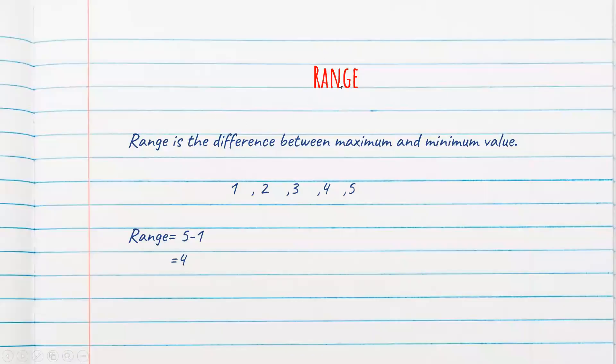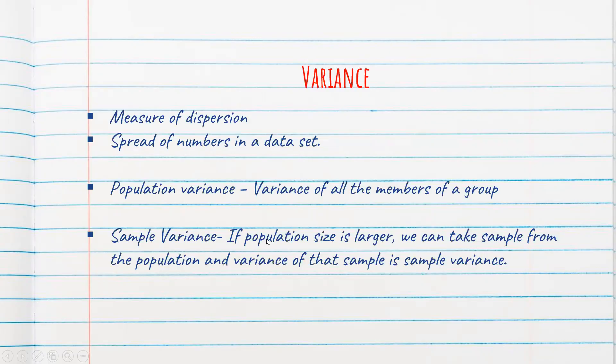First of all what is meant by range? Range is nothing but the difference between maximum value and minimum value. So there is a series of data 1, 2, 3, 4, 5. So what is the maximum value? That is 5 and the minimum is 1. So 5 minus 1 is equal to 4 which is nothing but the range here.